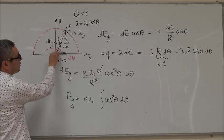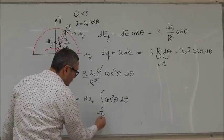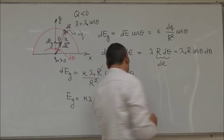So, theta here is changing from pi over 2 to minus pi over 2. So, from minus pi over 2 to pi over 2. So, these are the limits.